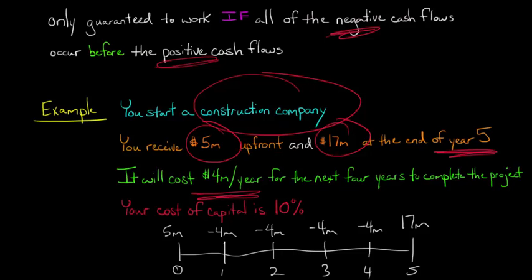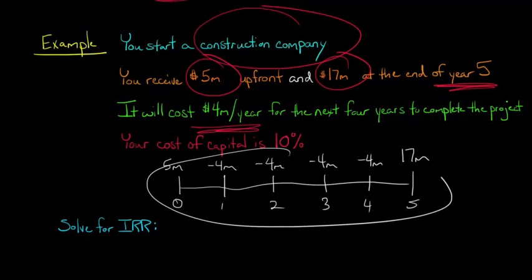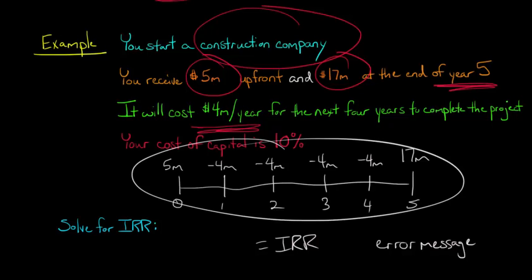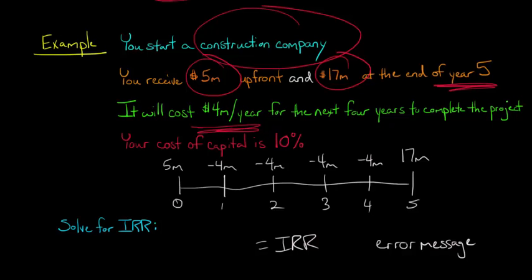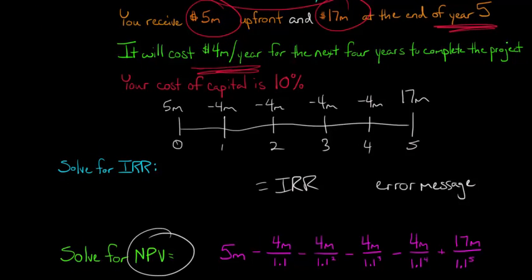The cost of capital is 10%. Now, we want to solve for the internal rate of return for these cash flows. I plug it into Excel using the IRR function, and it turns out there's an error message because there is no internal rate of return for this project. For this particular set of cash flows, there is no IRR — there's nothing that would make the NPV equal to zero. So we have to solve for NPV. We don't even have an IRR to compare against our cost of capital, so IRR is meaningless here.